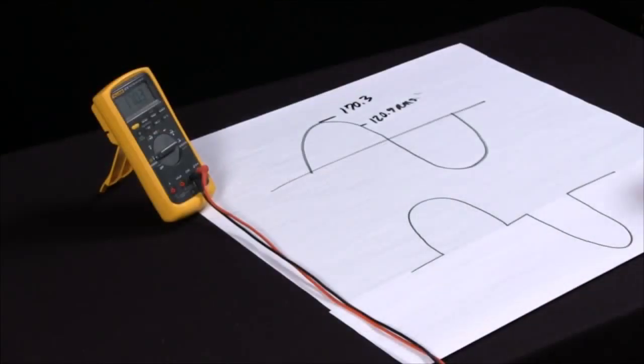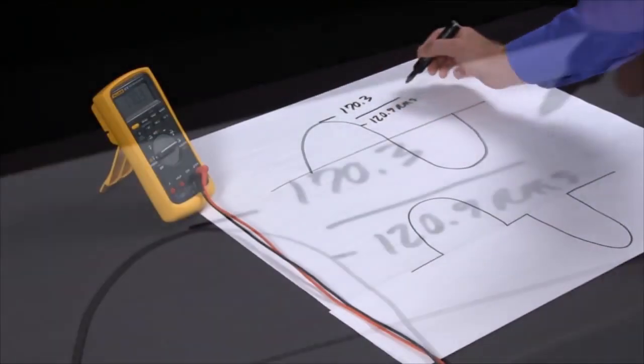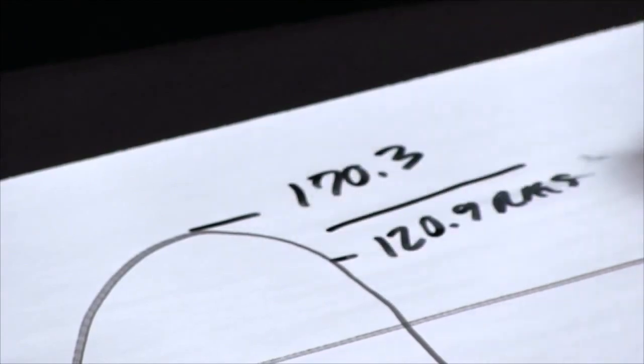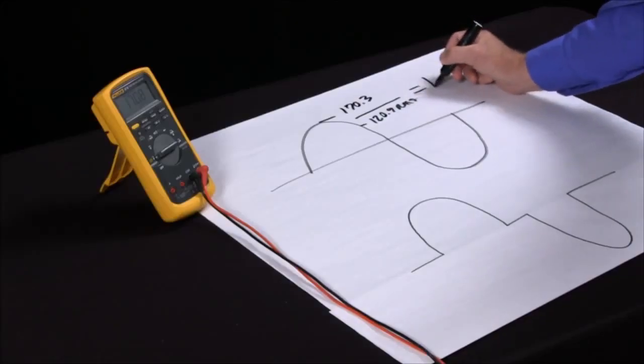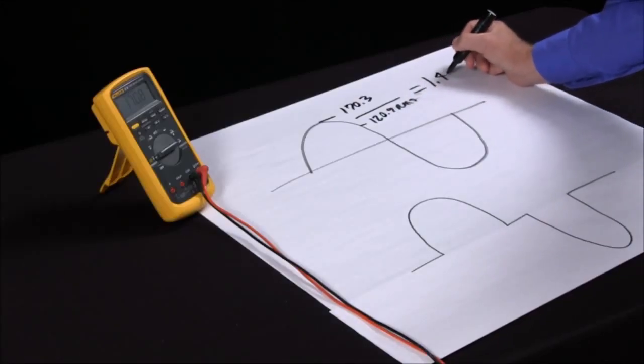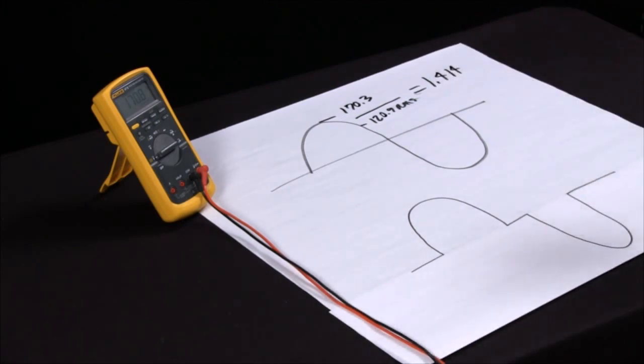Now there's something called the Crest factor, which if I divide the RMS into the peak on a nice clean sine wave, this should come to 1.414. Now we can all divide 120.9 into 170.3 and come up with 1.414. Yeah, maybe if we're Rain Man.